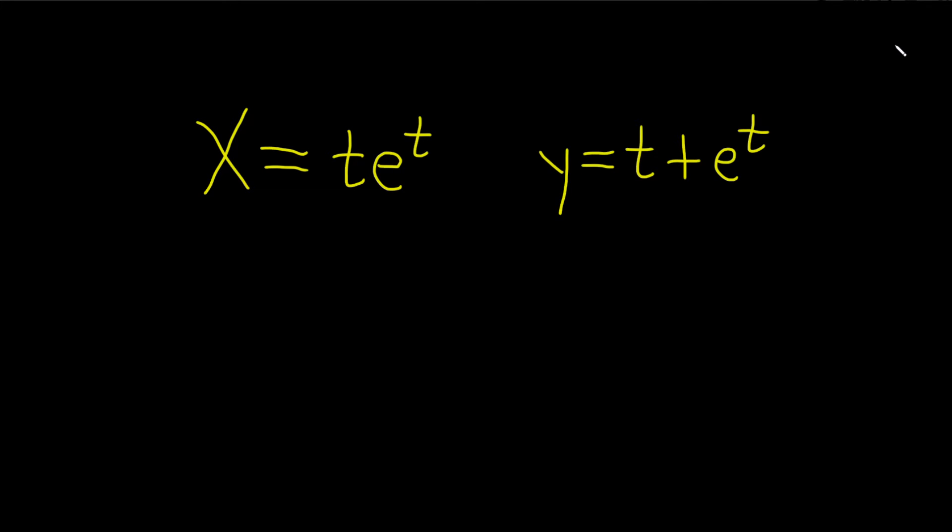Find dy/dx. So dy/dx is given by the formula dy/dt over dx/dt. Pretty easy to memorize the formula because you have y over x, y over x. So just dy/dt over dx/dt.